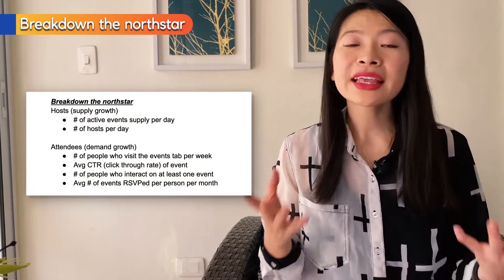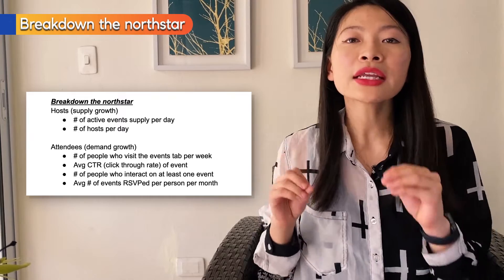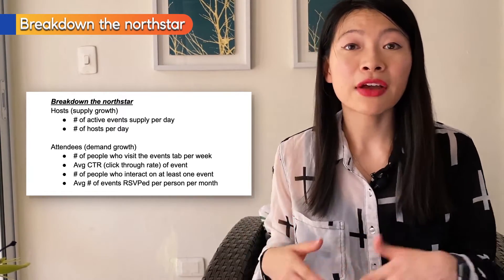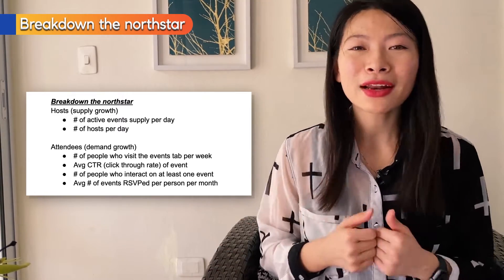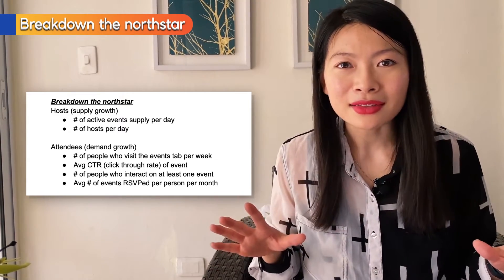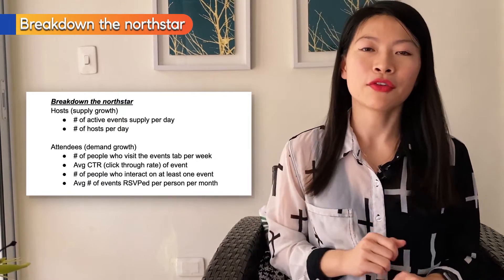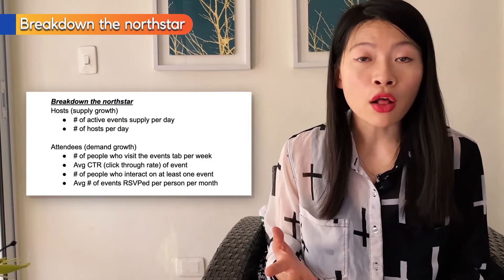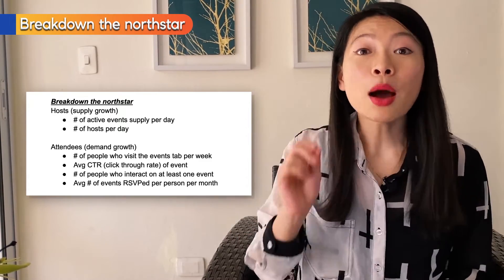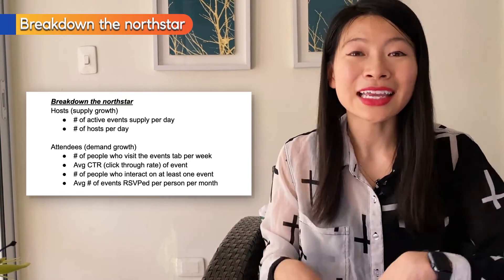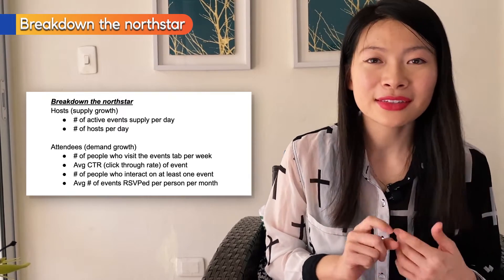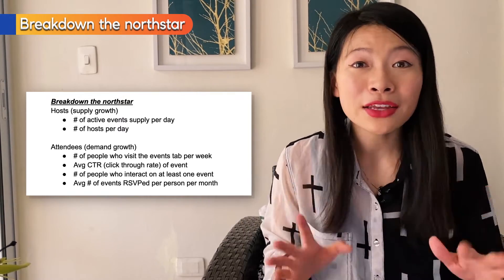Now let's move to the attendees side of the ecosystem. If we're thinking about the funnel, I first want to know there's a healthy number of people who visit the events tab. We want people regularly coming to the events product to discover new events and to be the key product they use to plan every weekend. I might also want to measure the average click-through rate of events to get an idea of how relevant these events are to most people. I might also want to count the number of people who are interacting on the events page through comments, posts, shares, and reactions, because this represents meaningful interactions happening on the events page.